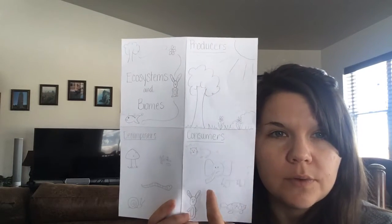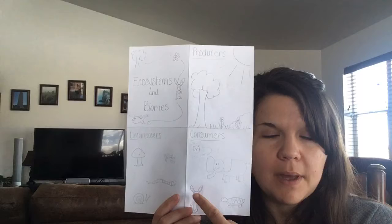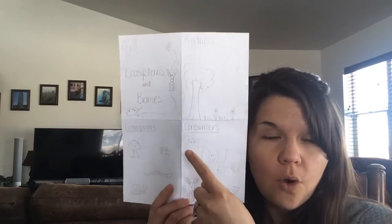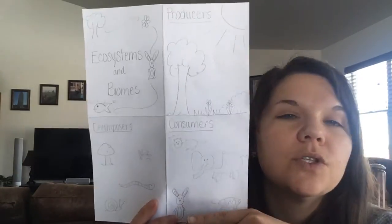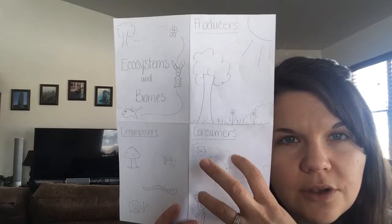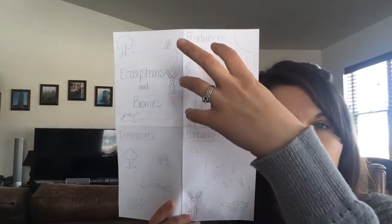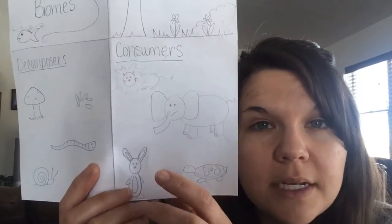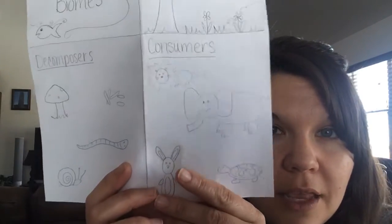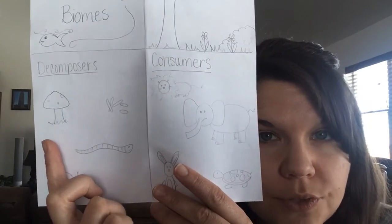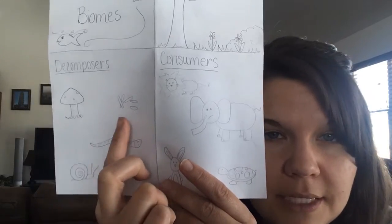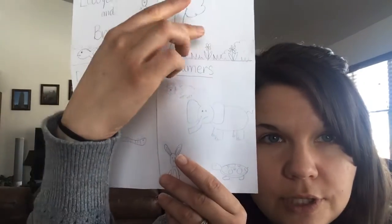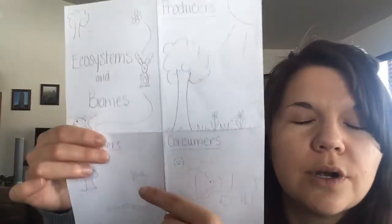That energy is not only for the plants themselves but also for the animals called consumers who eat them. Consumers get their energy from other things — it might be a rabbit, a turtle, or an elephant eating vegetation, or a lion eating another consumer. Eventually those consumers die, and their bodies break back down into nutrients of the earth, helped by decomposers like mushrooms, bacteria, earthworms, or snails. Decomposers put nutrients back into the soil so producers can start the cycle all over again.